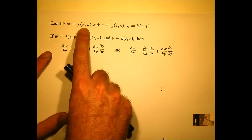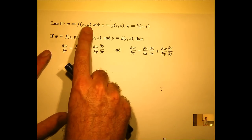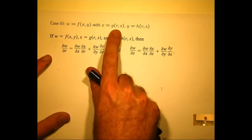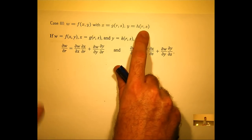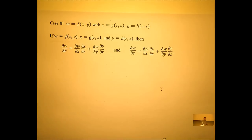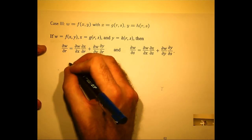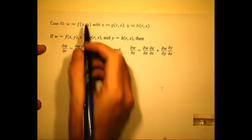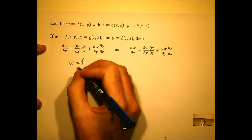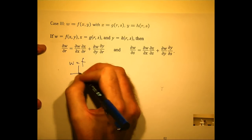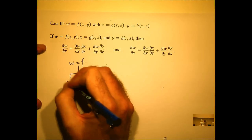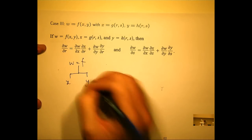A function of two variables, where each of the variables is a function of two variables. Just draw the diagram. So f depends on two things, x and y.